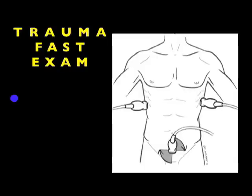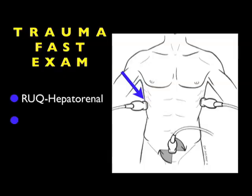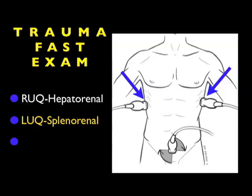In this module, we'll continue our journey looking at the views of the trauma fast exam. Hopefully you've had a chance to join me prior for the views of the right upper quadrant. In this module, we're going to look specifically at the left upper quadrant views of the trauma fast exam, known traditionally by two terms: the splenorenal or the perisplenic views.